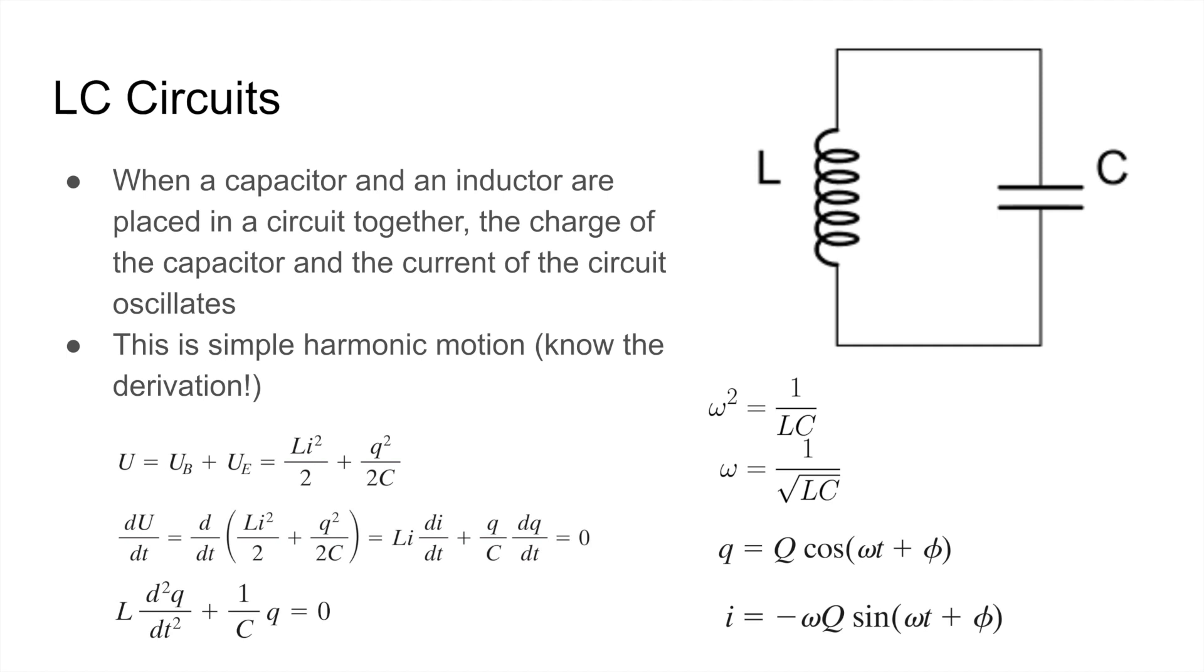Now the angular frequency can be easily gotten from here. Omega squared is 1 over LC, because if we divide by L from both sides, we get the familiar simple harmonic motion equation, and omega is defined that way. So next, we take the square root of both sides. Omega is 1 over the square root of LC. So using this,